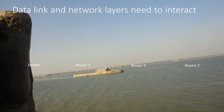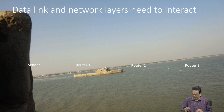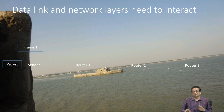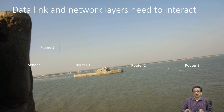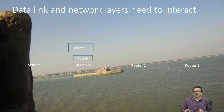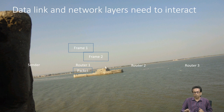The other critical part is that the data link and network layer need to interact with each other for right delivery. There is a packet coming from above and the data link layer constructs that frame. This packet is buried inside the frame and the frame is sent to the first router, where the packet is delivered. Router 1 then constructs a new frame — there is a reason for this which we will look at later.